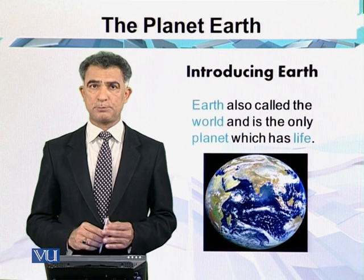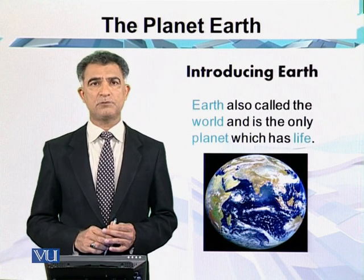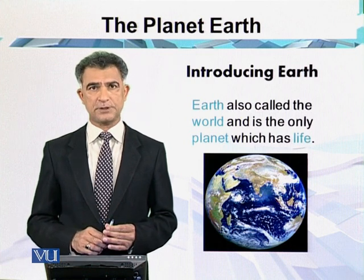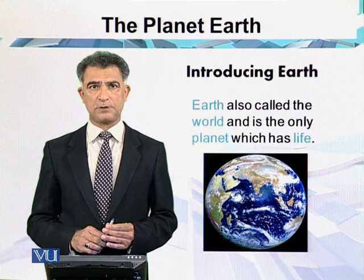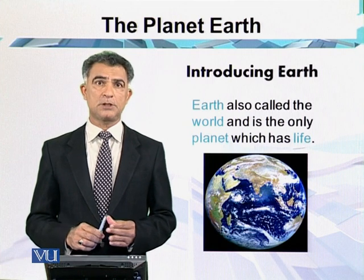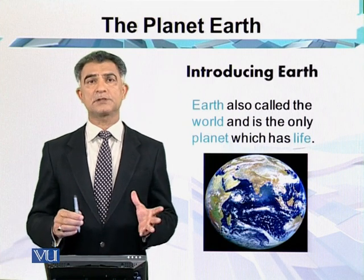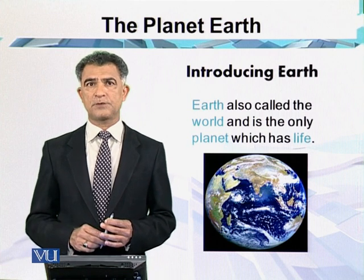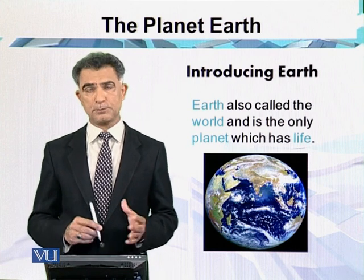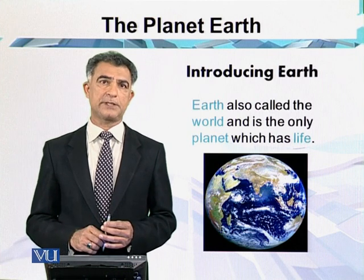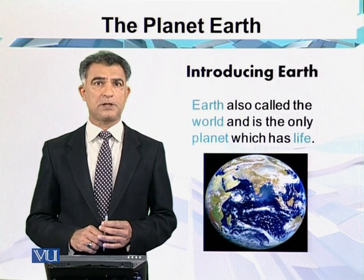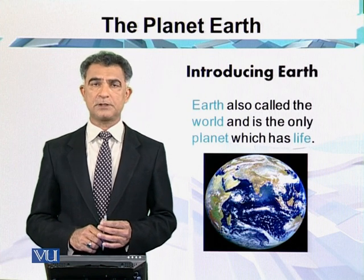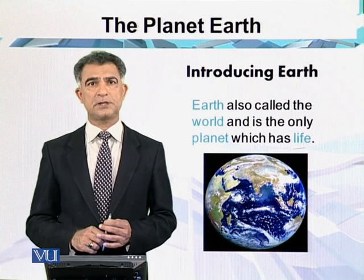This planet has a sustainable environment, and that's why this sustainability creates life over it. If we see this planet from the moon, we see it in different colors: the blue color is because of water, the green color is because of forests or vegetal cover, and the white color shows the area which is under ice.